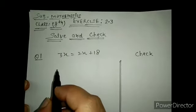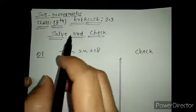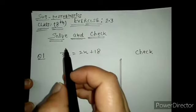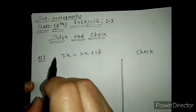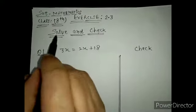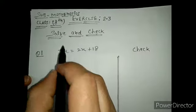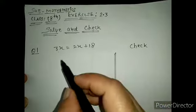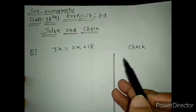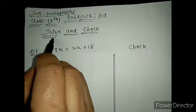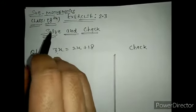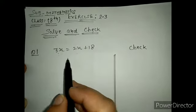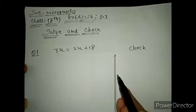Good morning students. Today is the Class 8 Mathematics class. We will discuss Exercise 2.3 in this lecture. In the previous lecture we already did Exercise 2.1 and 2.2. This exercise is very easy. There are two parts: first we simplify the equation, then we check the value we found for x to see if it is right or wrong. You will write from the NCERT book: solve and check.